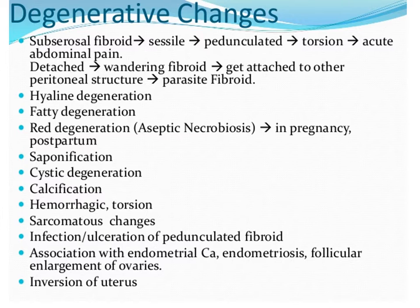The typical complications in fibroids are known as degenerative changes. The subserosal fibroid can be sessile or pedunculated. If a pedunculated subserosal fibroid is present, it can undergo torsion and result in acute abdominal pain and an abdominal emergency.